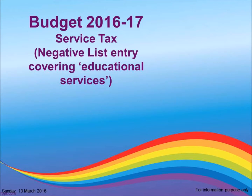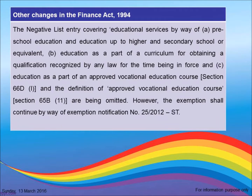In this part of Budget 2016-2017, we are going to discuss service tax amendments related to the negative list. The negative list entry covering educational services includes: (a) preschool education and education up to higher secondary school or equivalent, (b) education as part of a curriculum for obtaining a qualification recognized by any law in force, and (c) education as part of an approved vocational education course. Section 66D(L) and the definition of approved vocational education course under Section 65B(11) are being omitted; however, the exemption shall continue by way of exemption notification number 25/2012.